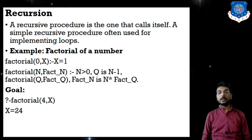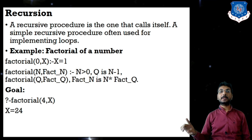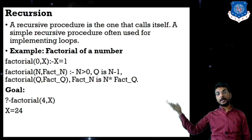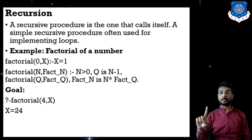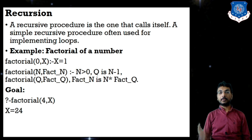Then factorial(Q, FactQ), and FactN = N * FactQ. So 5 factorial equals 5 * 4 factorial, 4 * 3 factorial, 3 * 2 factorial, 2 * 1 factorial, 1 * 0 factorial, and 0 factorial = 1. All these are combined with the multiplication operator. For 4 factorial, the final answer will be 24.